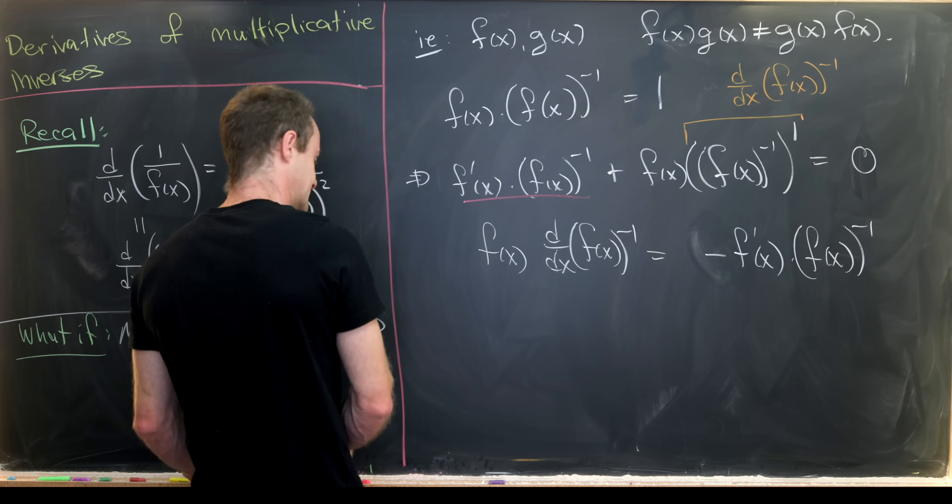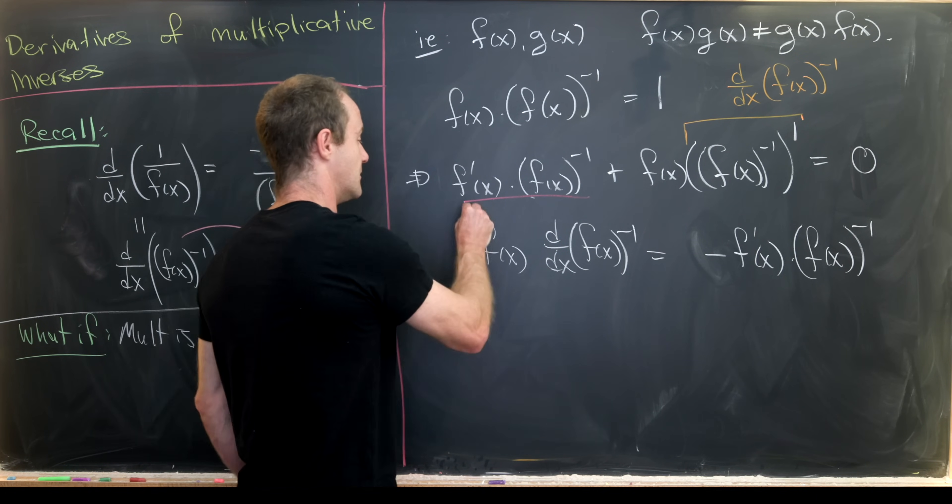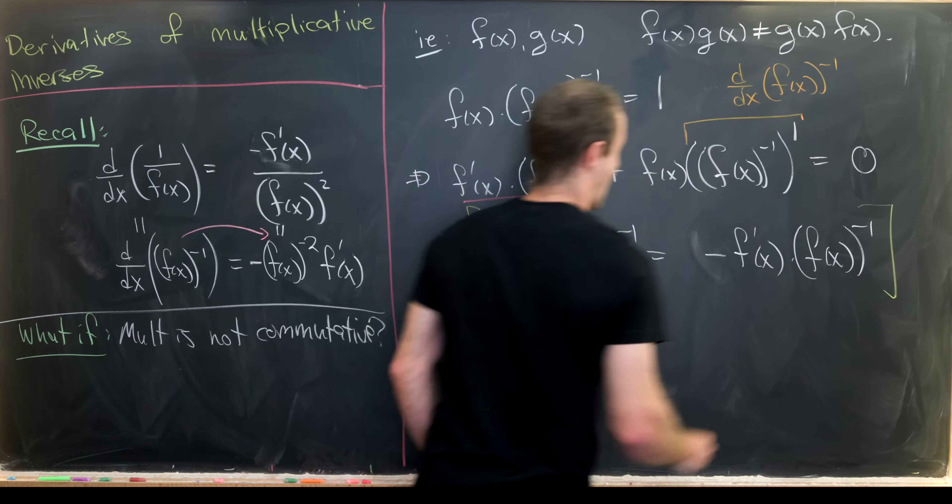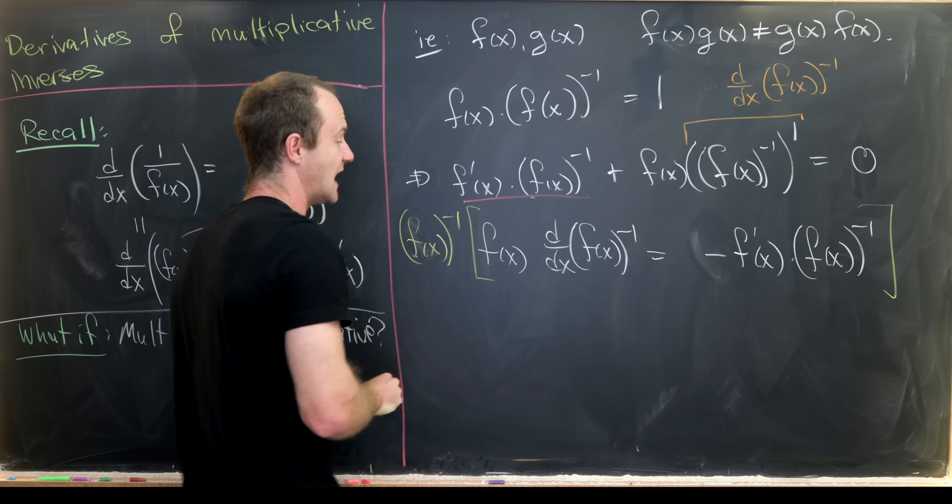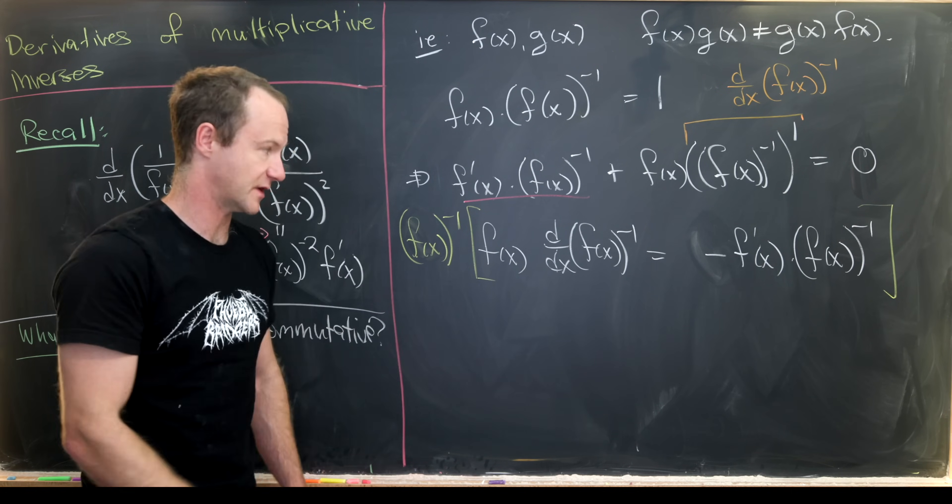Finally, we can left multiply this entire equation by f(x) to the negative 1, in other words the multiplicative inverse of f(x), and then we'll achieve our formula that we need.